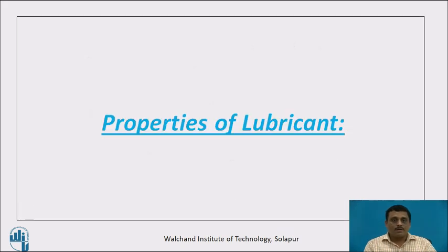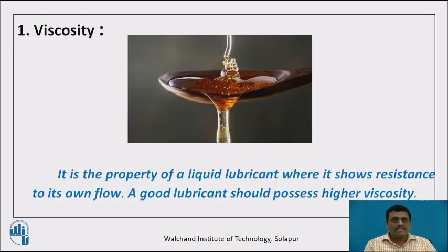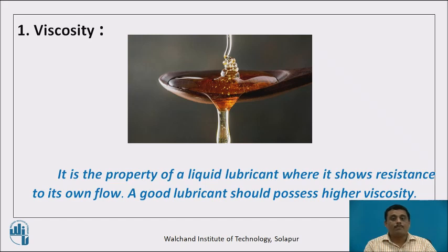Now, after functions, we will learn the properties of lubricant. The very first property is viscosity. It is the property of a liquid lubricant where it shows resistance to its own flow, and a good lubricant should possess higher viscosity. More thickness means more viscosity. A good lubricant is one which possesses more viscosity — if you take a low viscosity liquid as a lubricant, it will not protect the metal properly.